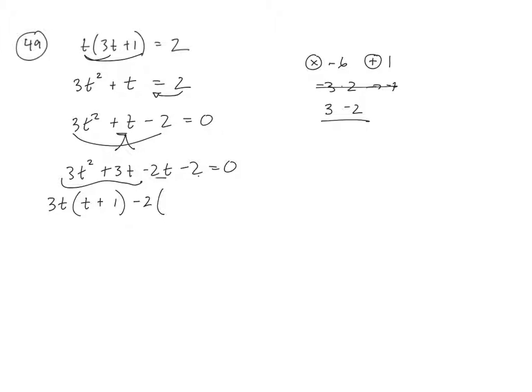And when I divide negative 2 into both of these, I get a t. Negative 2 divided by negative 2 is a positive 1, equals 0. Now, since this term and this term both have a t + 1 in it, I can write t + 1. And then I'll write 3t - 2 = 0.